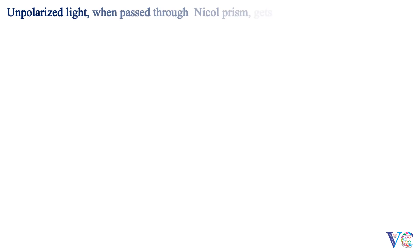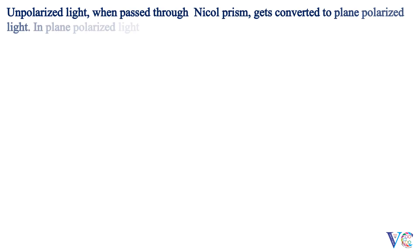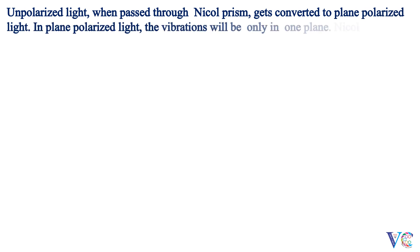Unpolarized light, when passed through a Nicole prism, gets converted to plane polarized light. In plane polarized light, the vibrations will be only in one plane. The Nicole prism functions as a polarizer.